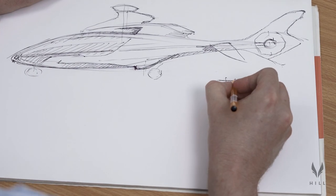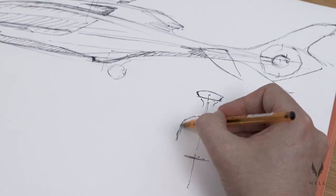The HX50 has actually got the widest fuselage in this class of helicopters at 1.65 meters, so you can comfortably sit five full-size adults in the back.